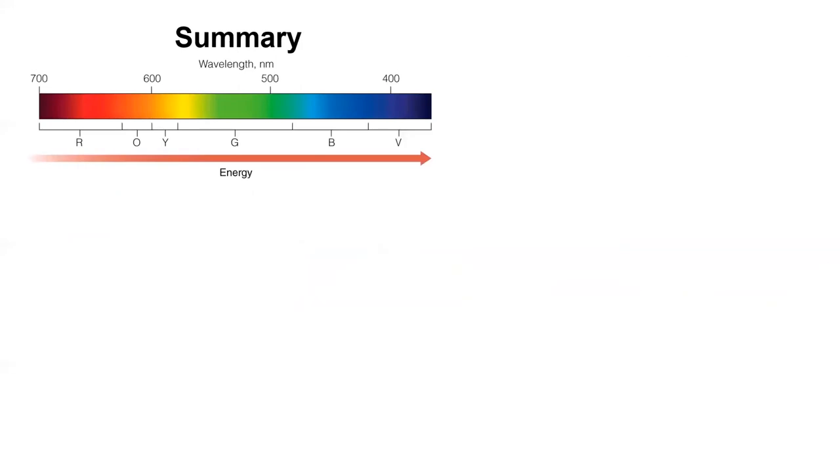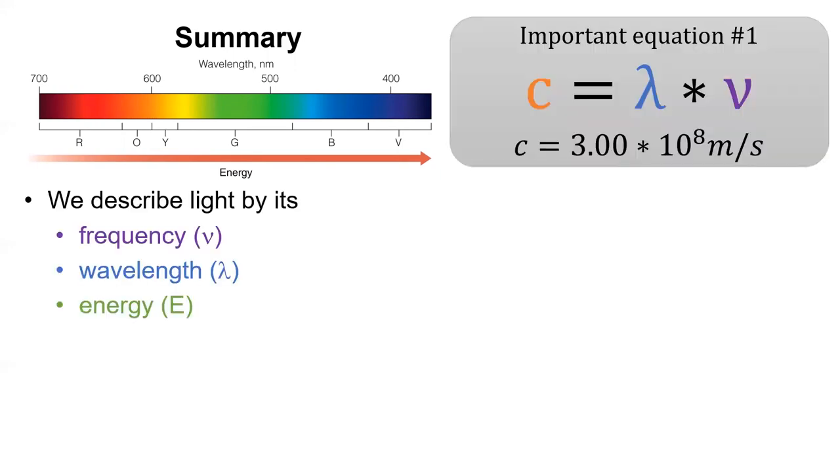To summarize what we've learned so far, light exists as a spectrum with long wavelength light corresponding to low frequency and low energy. As we shorten the wavelength of light, we change its color and increase its frequency and energy. Don't forget that humans can only see a narrow range of the colors in the universe. We typically define light by either its frequency or its wavelength, and these can be interconverted using equation number one.